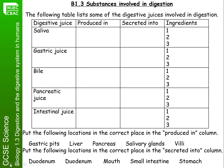You had a number of different digestive juices and needed to fill in the table with the words provided. Starting with saliva: saliva is produced in the salivary glands and is secreted into the mouth. Within saliva, you would find amylase enzyme, water, and mucus.